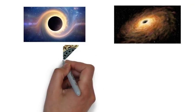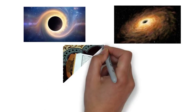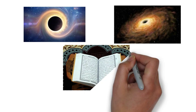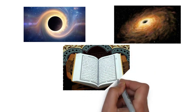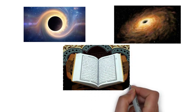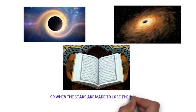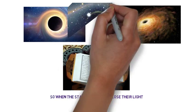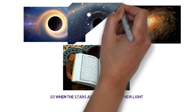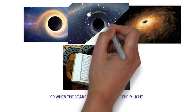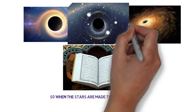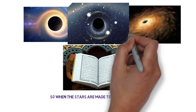In the Holy Quran, more than 1400 years ago, Allah Almighty said: Chapter 77, Verse 8, 'So when the stars are made to lose their light.' In this verse, the expression 'when the stars lose their light' is an accurate description of the stage of black dwarf and black holes, effaced and not seen.